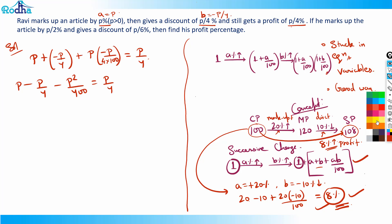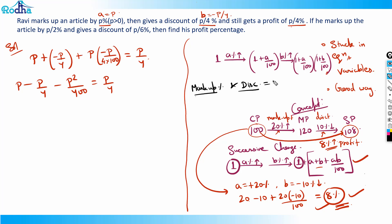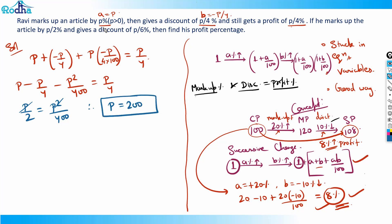Key concept: the successive change of markup percent and discount percent will result in profit or loss percentage. Solving P/2 = P²/400: since P > 0, we can cancel P from both sides, giving 1/2 = P/400, so P = 200.